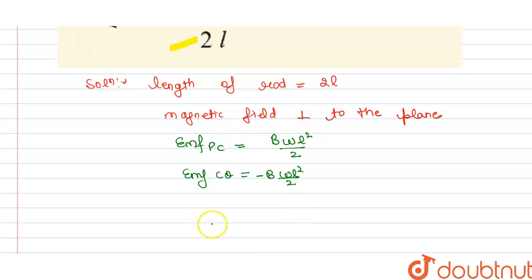And EMF due to CQ, this is minus B omega l squared divided by 2.